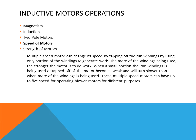Multiple speed motors can change speeds by tapping off portions of the run windings. Using only a portion of the windings generates less work, making the motor weaker and slower. When more windings are used, the motor is stronger. These multiple speed motors can have up to five speeds for different purposes. Most residential furnaces use a split phase motor that is also a multiple speed motor, with speeds to control different volumes of air for air conditioning and heating.